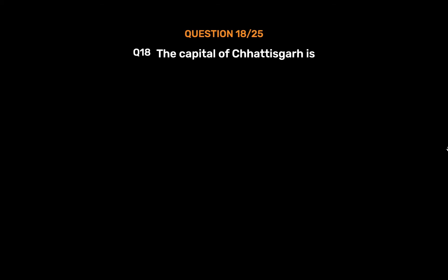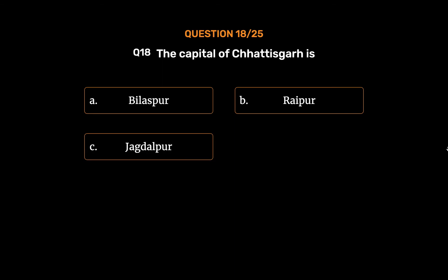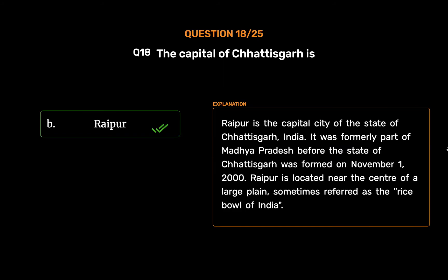Question No. 18: The capital of Chhattisgarh is — Option A: Bilaspur. Option B: Raipur. Option C: Jagdalpur. Option D: Durg. The correct answer is Option B: Raipur. Raipur is the capital city of the state of Chhattisgarh, India. It was formerly part of Madhya Pradesh before the state of Chhattisgarh was formed on November 1, 2000. Raipur is located near the center of a large plain, sometimes referred to as the rice bowl of India.